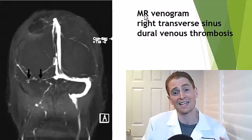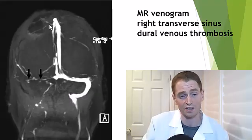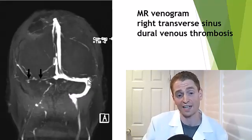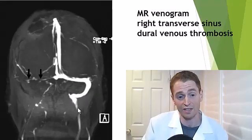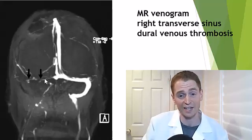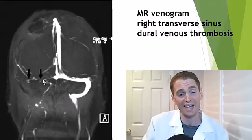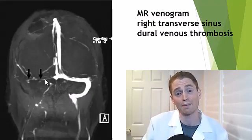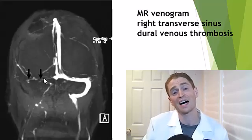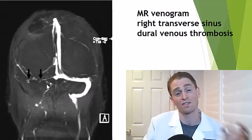This is an MR venogram showing a blockage in the right transverse sinus. Here is the superior sagittal sinus and the left transverse sinus, sigmoid sinus, going down into the jugular vein — but the system is completely blocked off on the right side due to a clot. This can cause headaches, strokes, and even brain hemorrhages, and is typically treated with blood-thinning medications such as heparin. However, be careful because the venous system is often highly asymmetrical, which could lead to false positives.